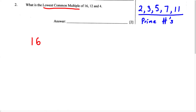We want to find the factors of 16. What are two numbers that when multiplied give you 16? We can say 8 multiplied by 2, because 8 times 2 is 16. We can see we have a prime number, which is going to be 2, so that side is now complete. Now we still have the number 8, so let's find the factors of 8. We know 2 and 4 are factors of 8 because 2 times 4 gives us 8.